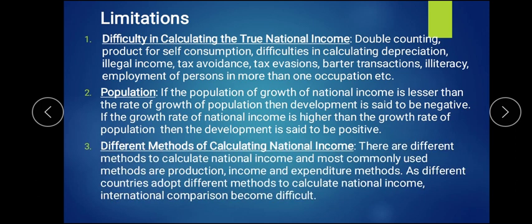The third limitation is different methods of calculating national income. There are three methods: output/production method, income method, and expenditure method. Different countries adopt different methods — if the USA calculates on a production basis and India on expenditure, we cannot compare them properly. This makes it very difficult to compare national income data across countries. These are the three limitations of growth rate of national income as an indicator.